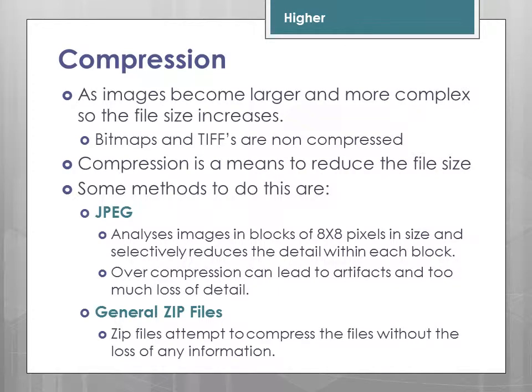Compression: if you compress an image, the file size becomes smaller. Bitmaps and TIFFs are both non-compressed image formats. JPEG uses clever maths to analyse images in blocks of 8×8 pixels and selectively reduces the detail within each block. If you over-compress, it can lead to artefacts and too much loss of detail. General zip files attempt to compress files without loss of any information, though images don't compress themselves too much with general compression.